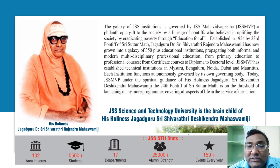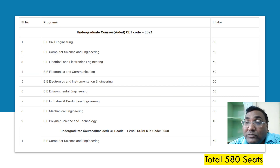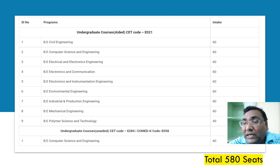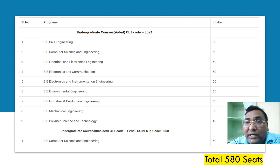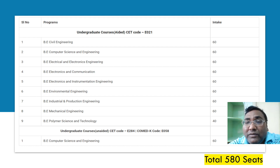That's just the introduction. Now, what are the total number of seats available? JSS Science and Technology has actually many codes within KCET, and I get a lot of questions from students regarding that. Some courses are added, some are unaided. The undergraduate program CT code is E21, which is the aided course with lesser fees — 60 seats per branch.